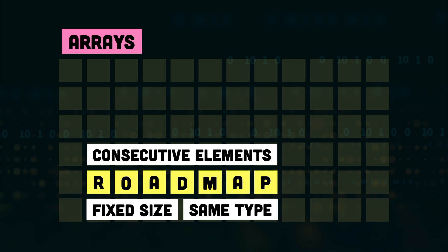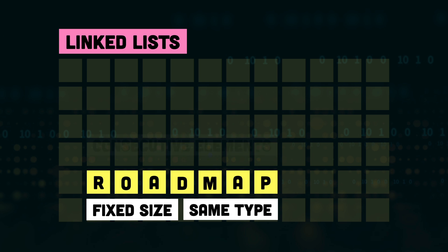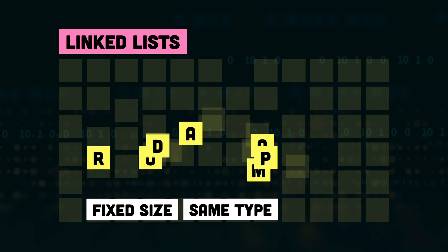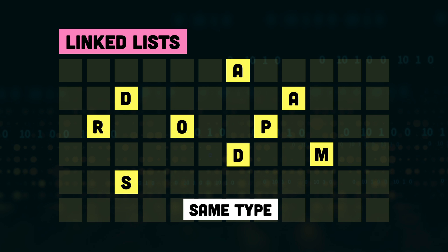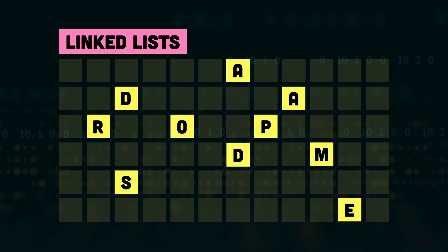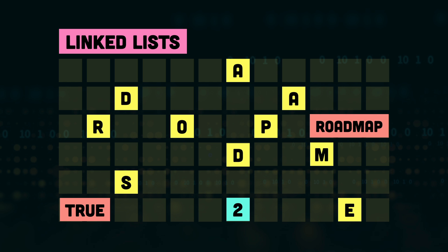Now if we talk about linked lists, we don't have these limitations. Items can be placed anywhere in memory — they don't have to be consecutive. They have a dynamic size, so you can keep adding more elements without defining the size of the list. The elements do not need to have the same type, so you can have a number, a boolean, or a string value in the same list. And the insertion and deletion operations in linked lists are much, much faster compared to arrays.